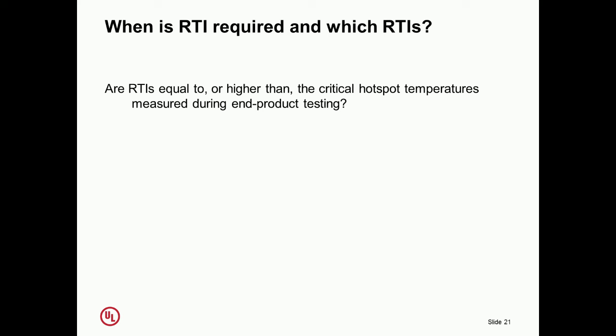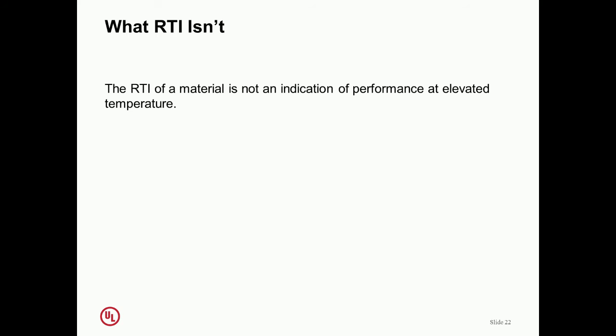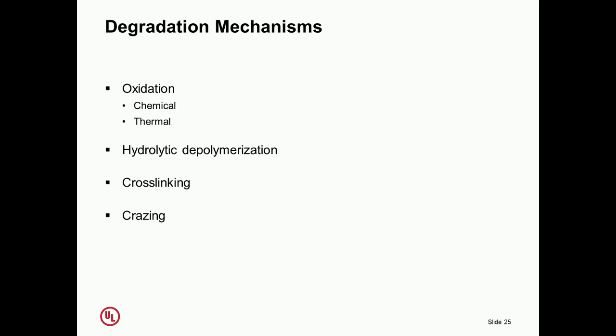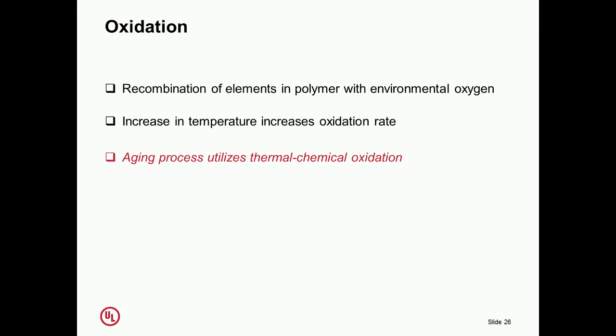If the RTI or relative thermal index is higher than the normalized hottest temperatures, or what we call sometimes worst case temperatures during normal use, then we consider it to be suitable. But again, it's not an indicator of performance at elevated temperature at all, it's just showing that it maintains its characteristics. A lot of materials will have generic RTIs based on a lot of field experience, and many will have that relative thermal index identified through testing. Let's talk quickly about the degradation mechanisms. We have oxidation whether chemical or thermal, hydrolytic depolymerization, cross-linking, crazing, etc., with polymer materials.